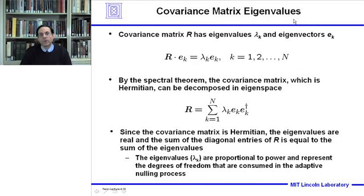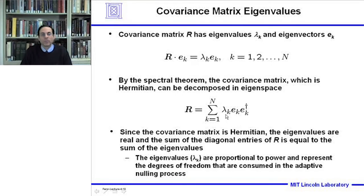The covariance matrix eigenvalues represent the adaptive array degrees of freedom consumed in the nulling process. To show equivalence between the focus near field and focus far field cases, we compare the covariance matrix eigenvalues. The covariance matrix R has N eigenvalues and N eigenvectors. By the spectral theorem, the Hermitian covariance matrix can be decomposed in eigenspace as a summation where lambda sub K is the K-th eigenvalue and E sub K is the K-th eigenvector. The eigenvalues are real and proportional to power, representing degrees of freedom consumed in the adaptive nulling process.